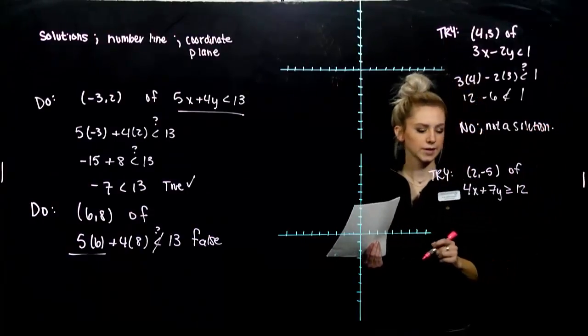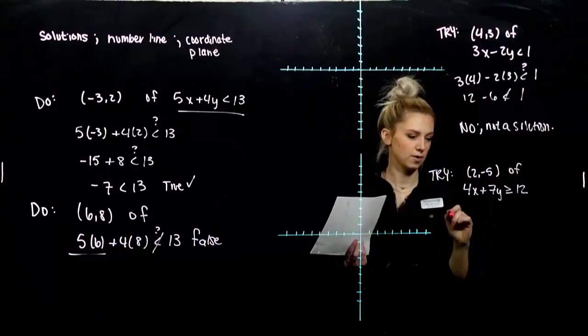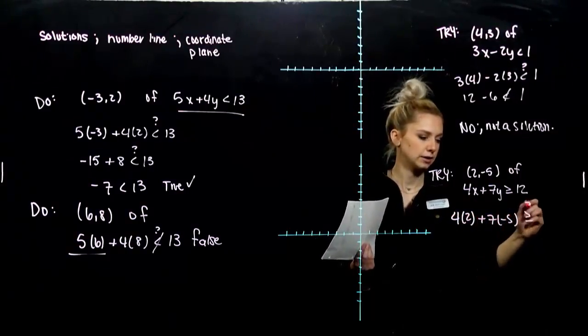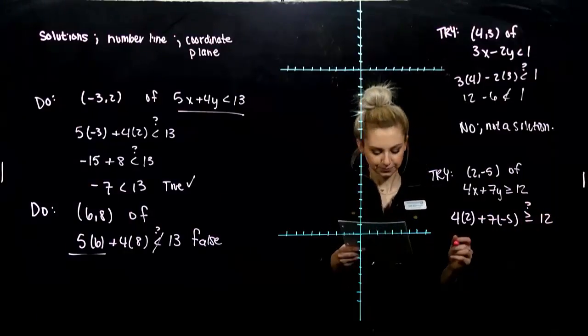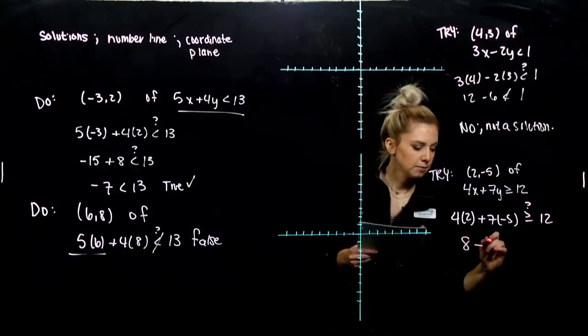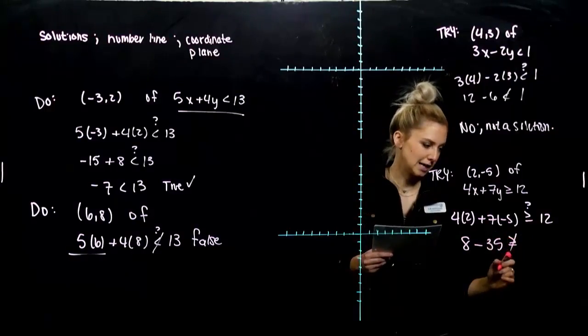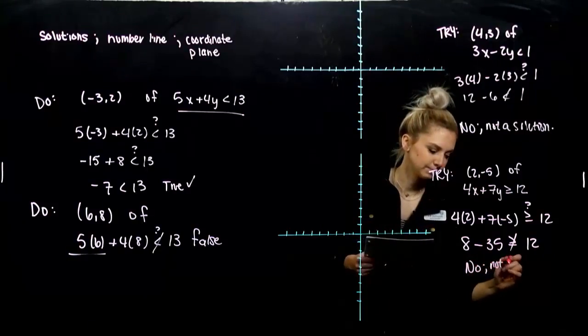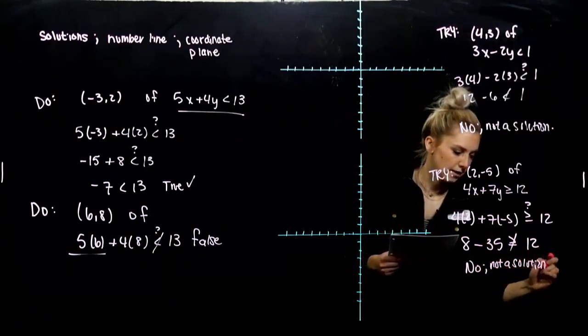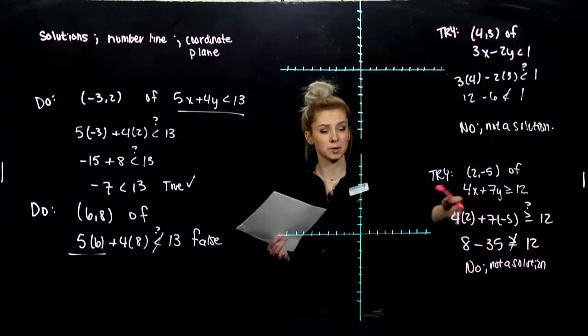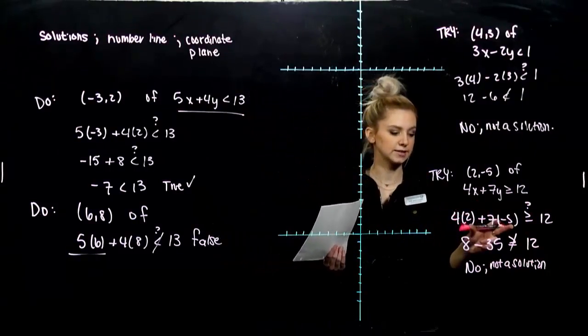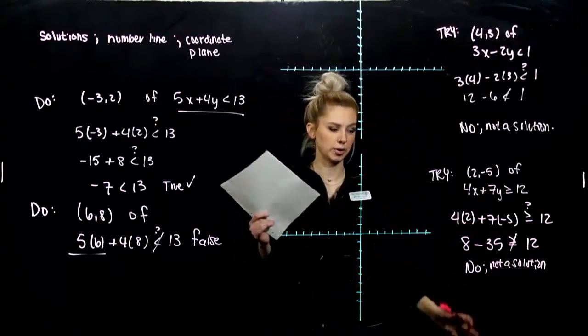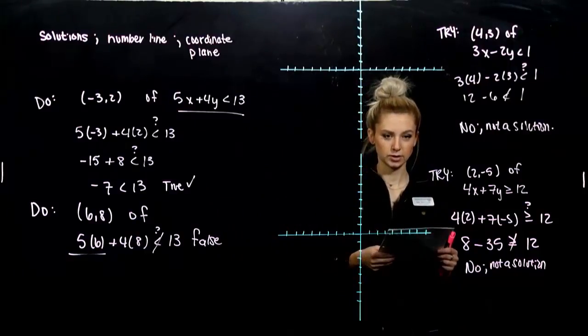And for the second one, again, plugging in. 2 for x minus 5 for y. 4 times 2 plus 7 times minus 5. Is that really greater than or equal to 12? So we're looking at 8 minus 35. That's going to be negative. That's definitely not greater than 12. So nope, not a solution. And we have to be able to compute if a point is going to satisfy an inequality when we're determining which half plane is a part of our solution set. So we'll look at that next.